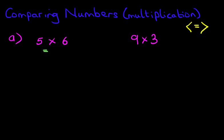Let's do this one first. We've got 5 times 6. What is 5 times 6? Now you should know this from your 5 or 6 times table. 5 times 6 is 30.